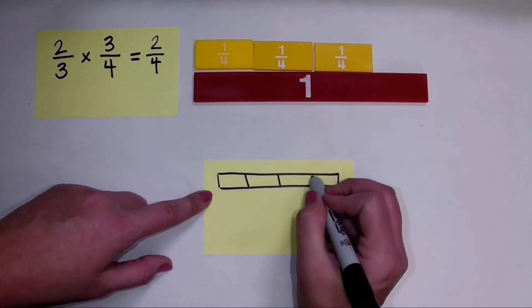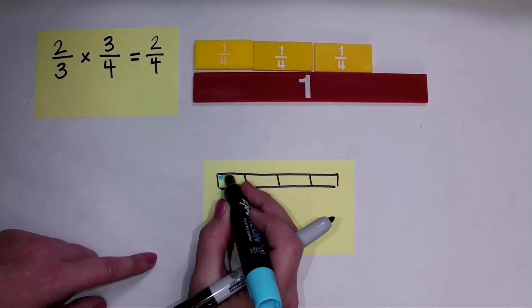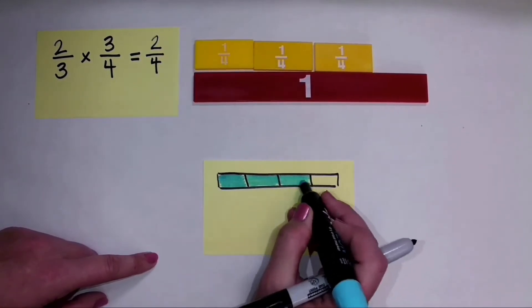Here is a whole divided into 4 equal parts. And I'm going to show the fraction 3 fourths by shading in 3 of the 4 parts, just like that.